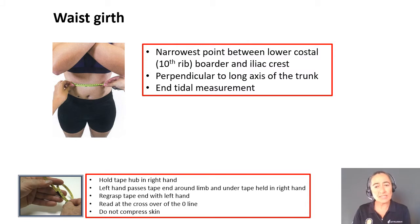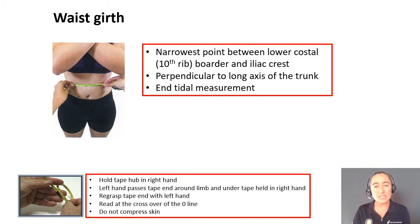What we're looking for is the narrowest point between the lower costal — i.e. the 10th rib border — and the iliac crest. The tape measure needs to be horizontal, so perpendicular to the long axis of the trunk, and ensure that's at the end tidal measurement in terms of the breathing.